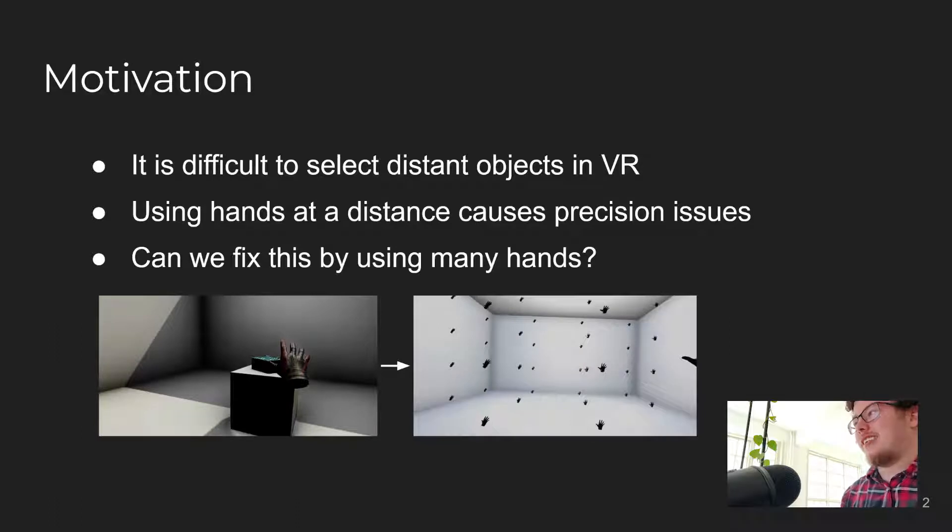The motivation behind Ninja Hands started out with frustration that it's difficult to select distant objects in virtual reality, especially if you want to retain the hand metaphor with a virtual hand that matches the movements of the user's physical hand.